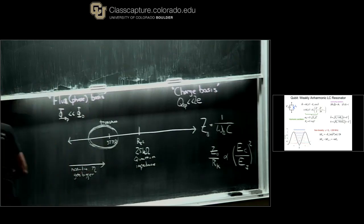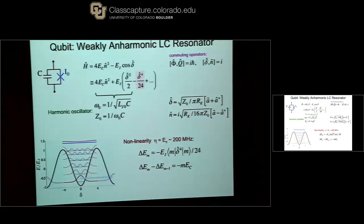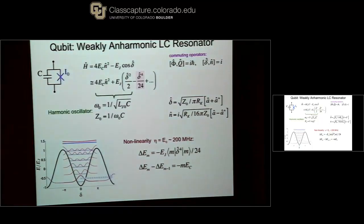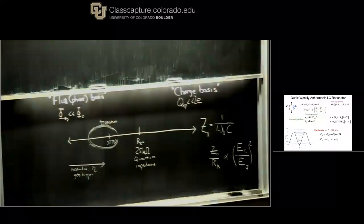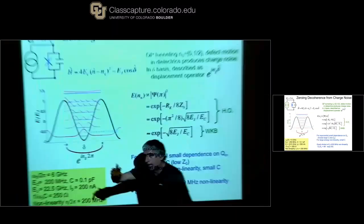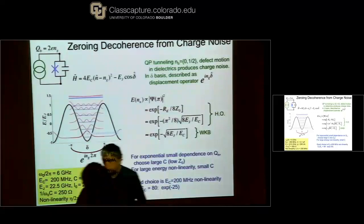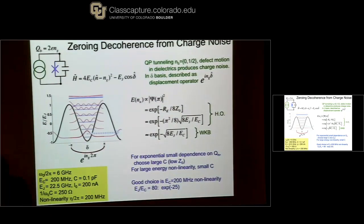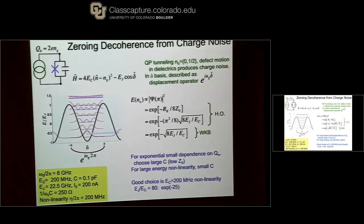This is what the transmon calculation is about. We need to know the sensitivity to charge while in the phase basis. This was worked out by the Yale group when they invented the transmon — I'm going to give you the simple experimentalist view of how to think about this.